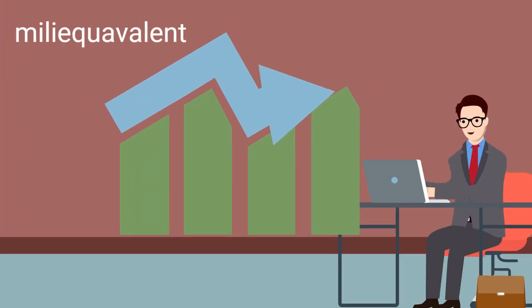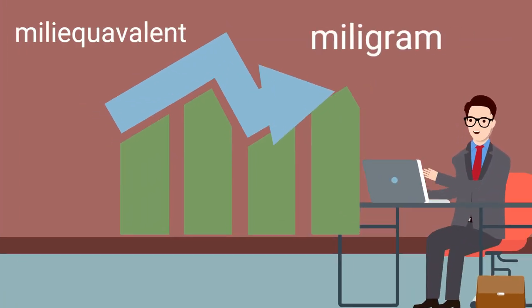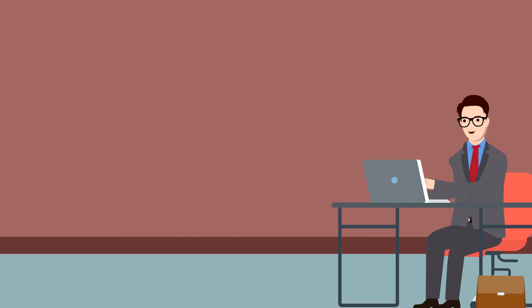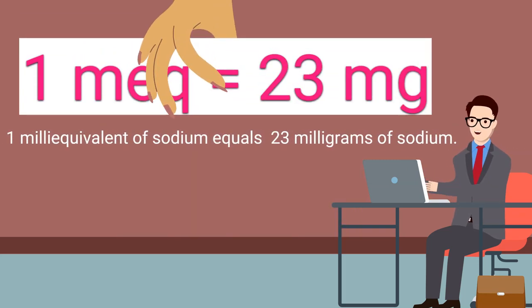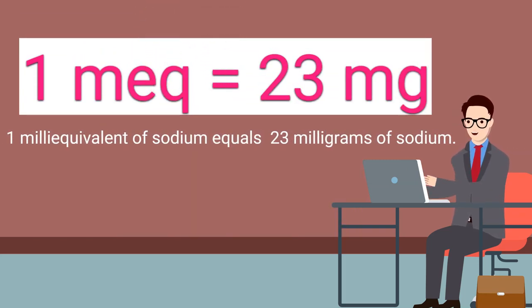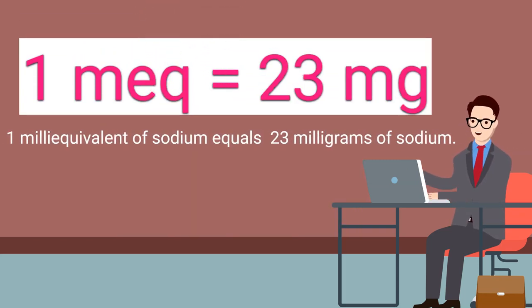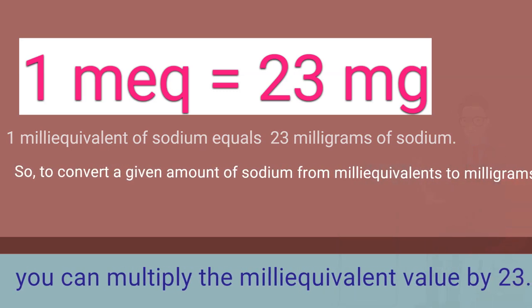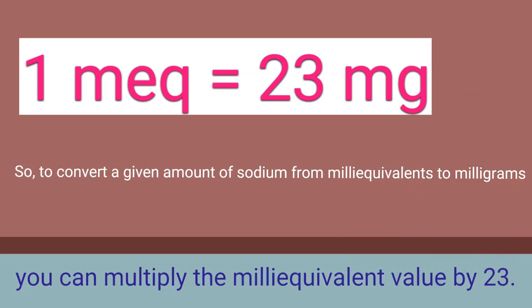To convert sodium from milliequivalents to milligrams, you can use the following formula: 1 milliequivalent of sodium equals 23 milligrams of sodium. So, to convert a given amount of sodium from milliequivalents to milligrams, you can multiply the milliequivalent value by 23.